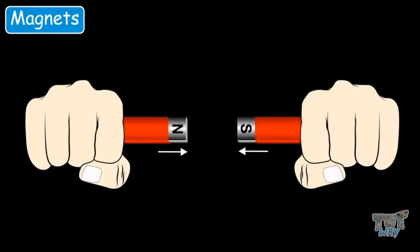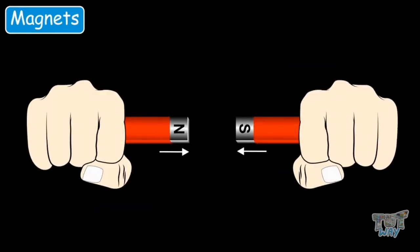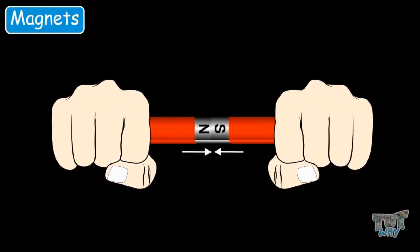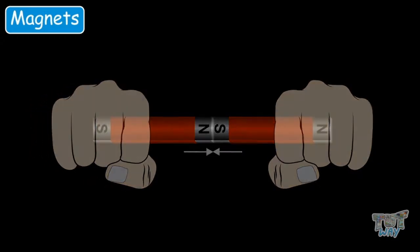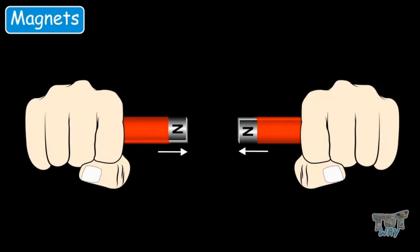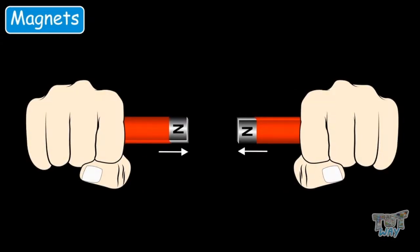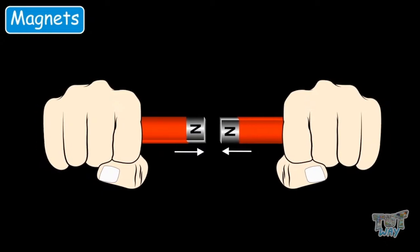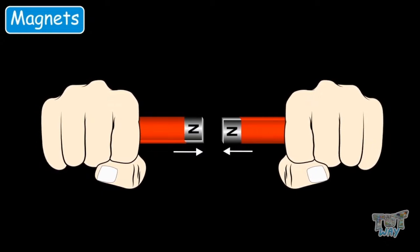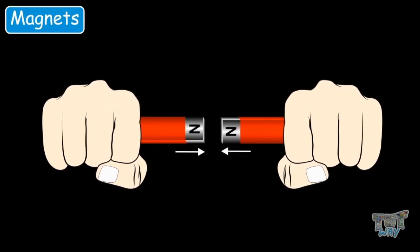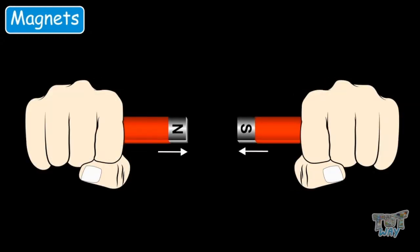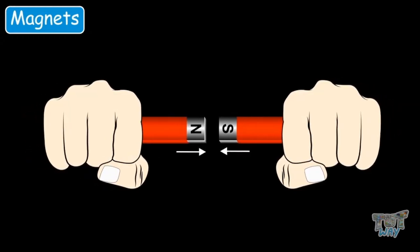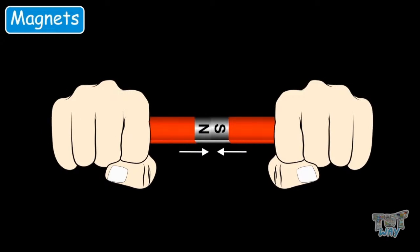If you take two magnets and bring the north pole of one magnet near the south pole of the other, they will attract each other. And if you bring the north pole of one magnet close to the north pole of the other, they will repel each other — you will not be able to join them. In the opposite case, opposite poles will strongly attract each other and stick together.